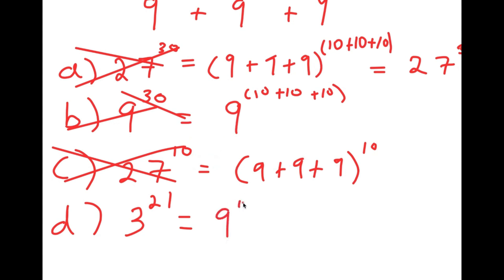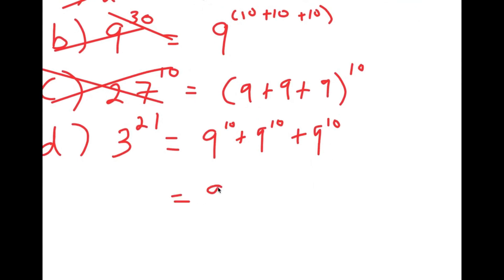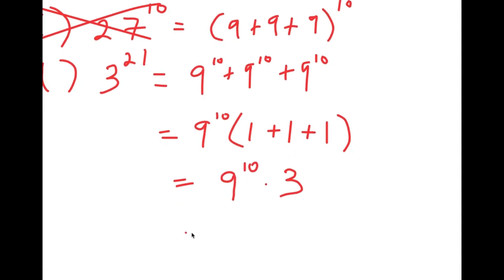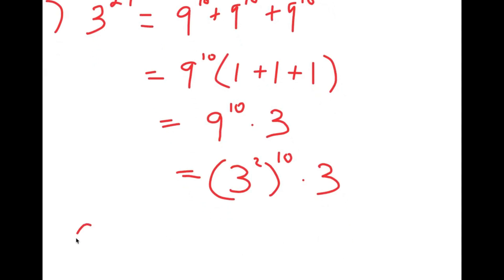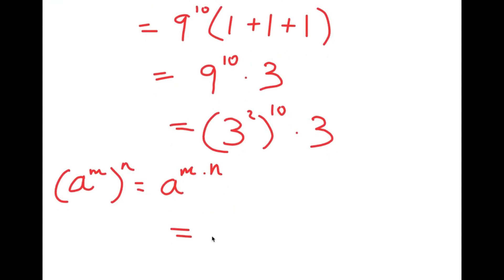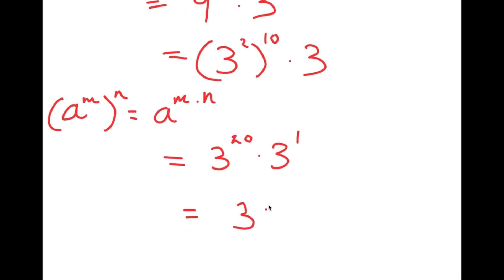Starting with 9 to the power of 10 plus 9 to the power of 10 plus 9 to the power of 10, I factor out 9 to the power of 10 to get 9 to the power of 10 times (1 plus 1 plus 1), which equals 9 to the power of 10 times 3. This equals 3 squared to the power of 10 times 3. Using the rule that a to the power of m to the power of n equals a to the power of m times n, I get 3 to the power of 20. Multiplied by 3 to the power of 1, adding exponents gives 3 to the power of 21.